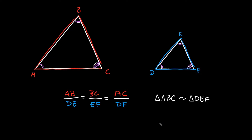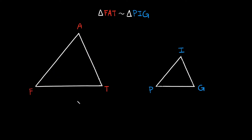Now that we know we can relate their sides, let me show you how to solve for a missing side. We have triangle FAT and triangle PIG, and I'm telling you these are similar triangles, so their angles are the exact same. Let's say side FT is 12, side FA is 9, and AT is X. On triangle PIG, side PG is 8, side IG is 4, and side PI is Y.